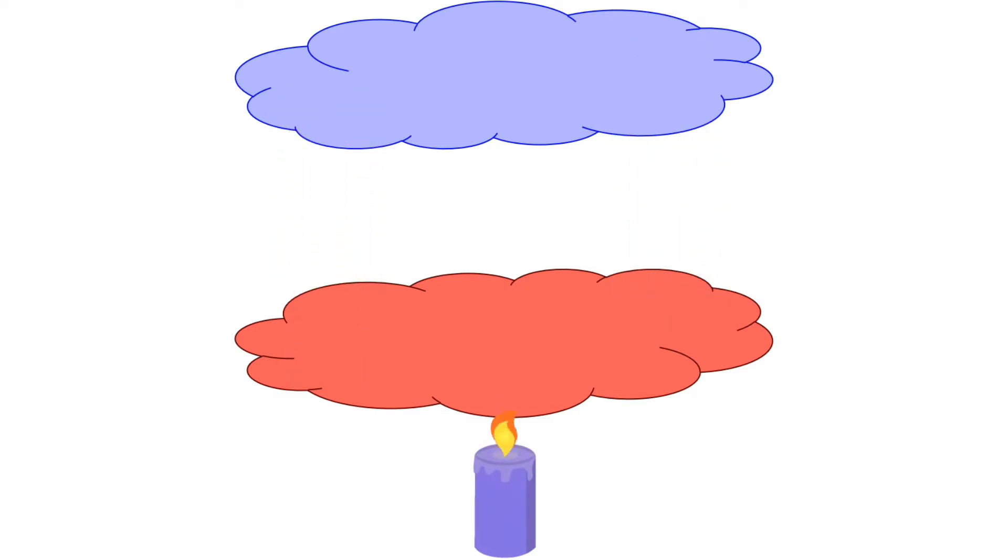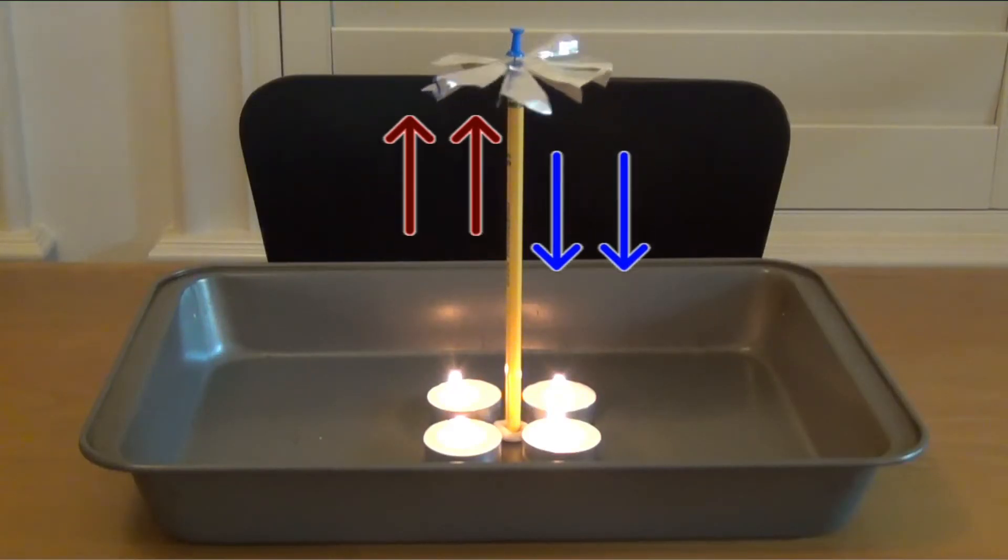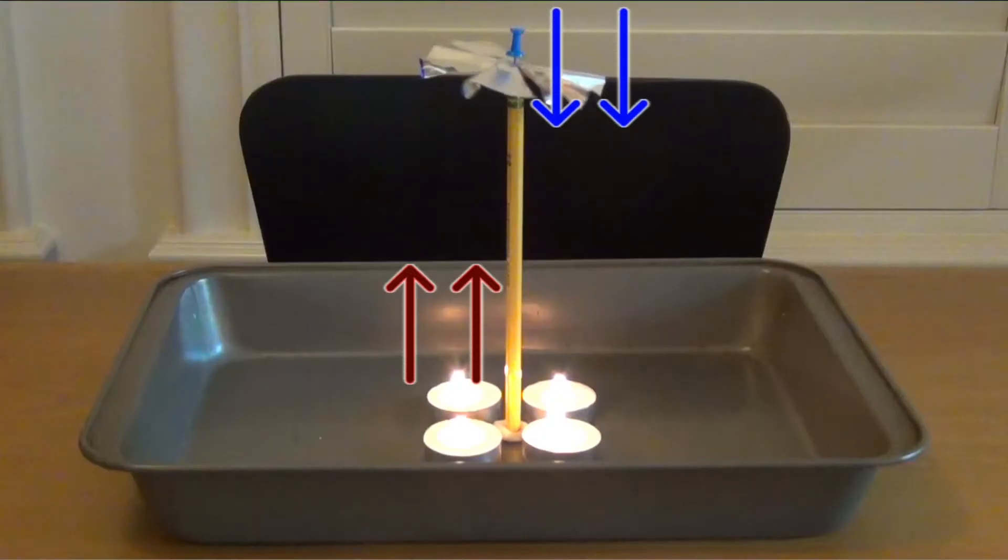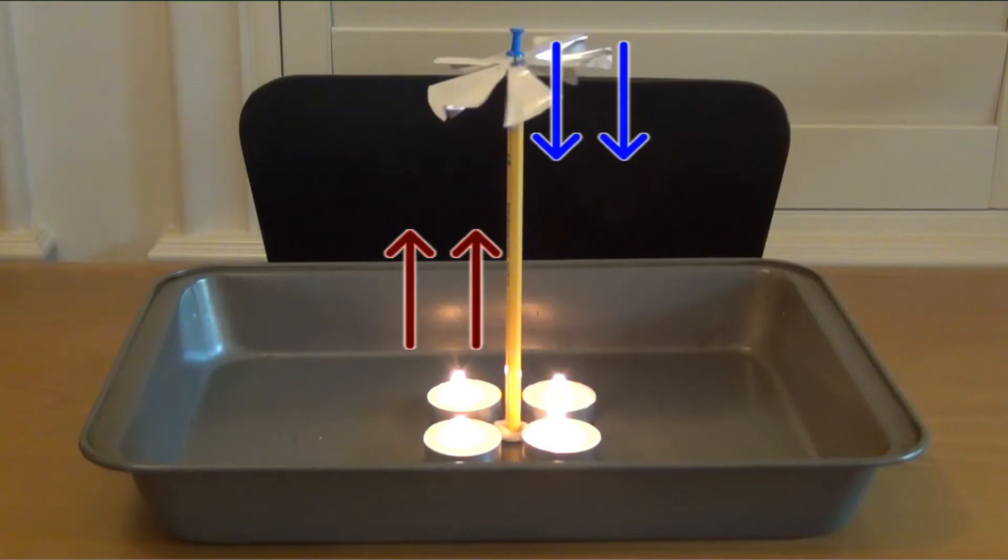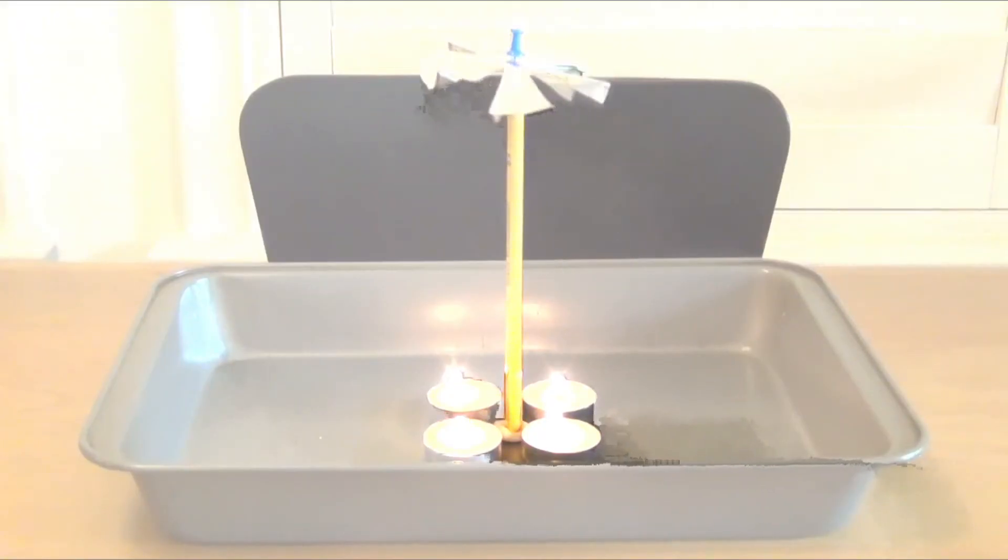creating an endless cycle of warm and cold air. If we look closely at our experiment, we see that this same movement of cold and hot air, or what we call convection currents, is what's responsible for the spinning of our fan.